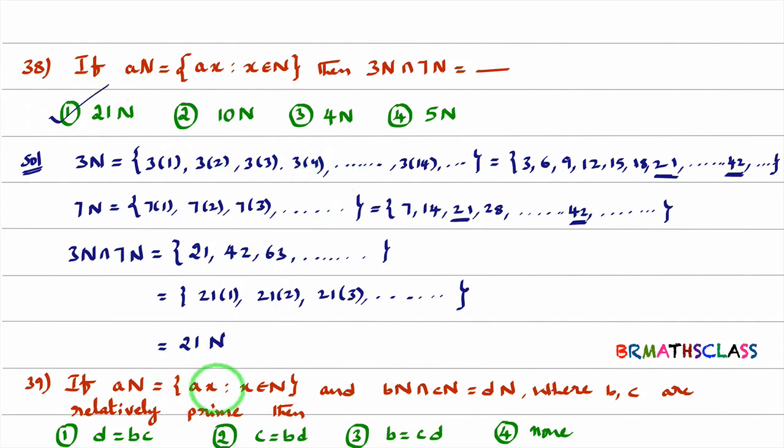Now you see second problem also of same type. You observe the question first. The set AN contains elements of the form ax and they are saying that bN intersection cN is dN. They are asking bN intersection cN is what? Here they given bN intersection cN is dN. They already mentioned it is dN where b, c are relatively prime. Relatively prime means the GCD of the elements b, c is 1. What is the GCD of 3, 7? You know how to calculate GCD of 3, 7?